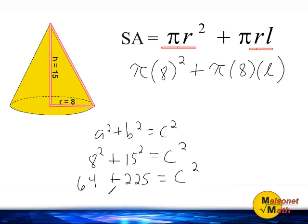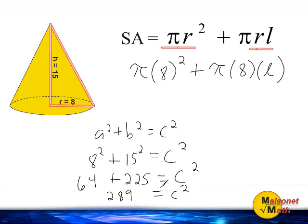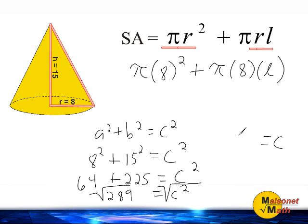8 to the second power is 64, and 15 to the second power is 225, and that is equal to c squared. 225 plus 64 is 289, equal to c squared. Now we have to isolate c by eliminating the exponent of 2, and to get rid of an exponent of 2 you do the opposite, which is to take the square root. The square root and the second power cancel out, leaving us with c. And the square root of 289 is exactly 17, so c equals 17 units, which is our slant height.